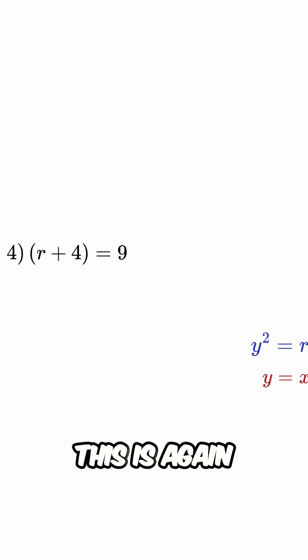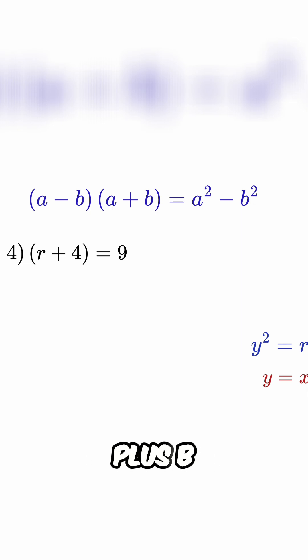Thus, this is again of the form a minus b times a plus b and thus this will become r squared minus 4 squared or r squared minus 16, which equals 9.